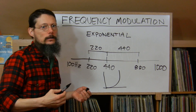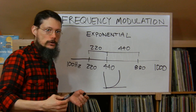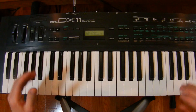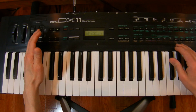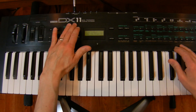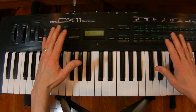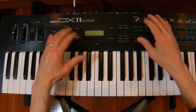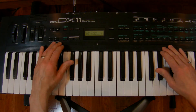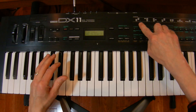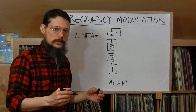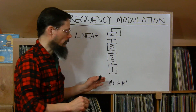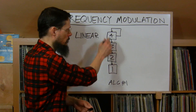Linear FM is hard to do with any accuracy on an analog synth, so usually you use a digital synth — and for that, we'll have to bring out the big guns. You were probably wondering when a Yamaha DX synth would appear in this video. I don't have a DX7, but I do have a DX11. Linear FM synthesis is usually described in terms of algorithms and operators. This is Algorithm 1 on the DX11, and it has four operators.